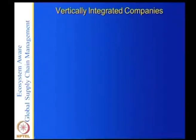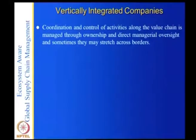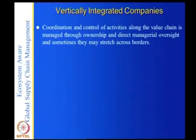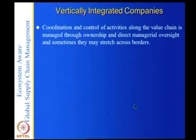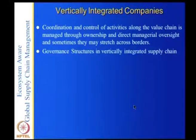In vertically integrated supply chains, coordination and control activities along the value chain are managed through ownership and direct managerial oversight, sometimes stretching across borders. For example, General Motors may have branches anywhere in the world, but everybody has to listen to the president. Examples of vertically integrated companies include Flextronics and Zara.